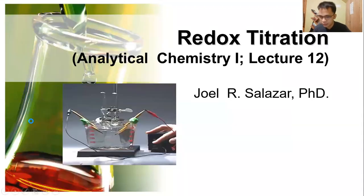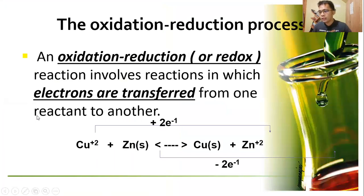Let's begin our discussion. The redox titration involves an oxidation reduction process, which involves the transfer of electrons from one reactant to another. Consider this example below here.